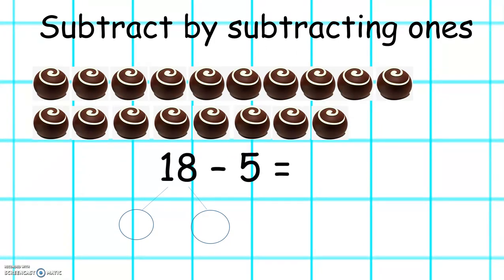Here we're going to solve 18 take away 5. If we partition 18, it is 10 and 8. We're going to cross out 5.